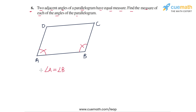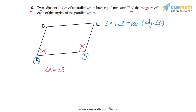Using this fact, we have to find all four angles of the parallelogram. Now we note that angle A and angle B are adjacent angles in the parallelogram as well, so their sum must be equal to 180 degrees. So not only are these two angles equal, their sum is also equal to 180 degrees.